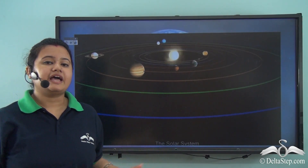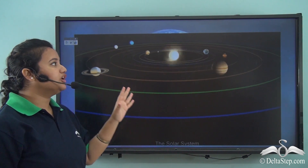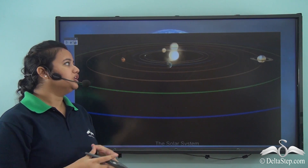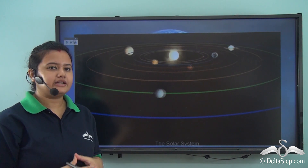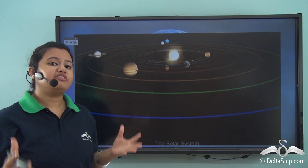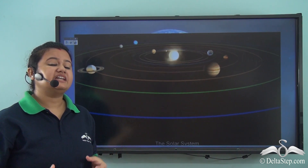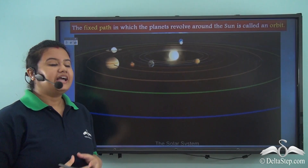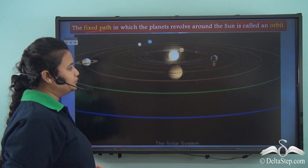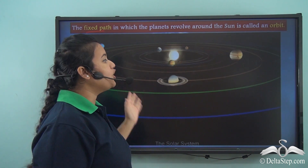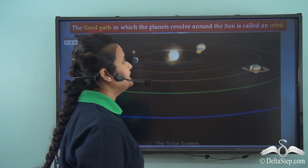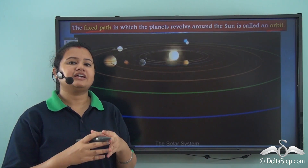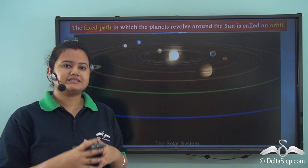We know our earth and other planets revolve around the sun. These celestial bodies do not move haphazardly or randomly. Rather they move in a well-organized manner in a fixed path around the sun. This fixed path in which the planets revolve around the sun is called the orbit. So orbit is a fixed path in which the planets move around the sun.